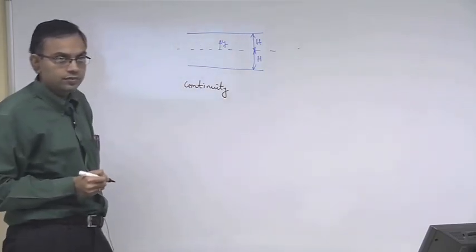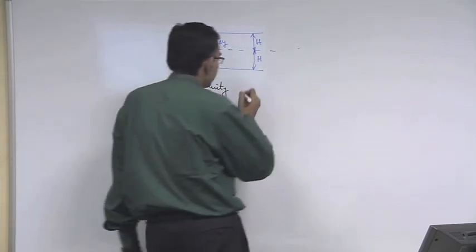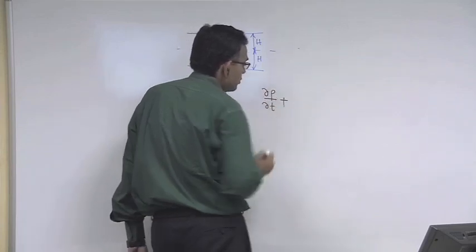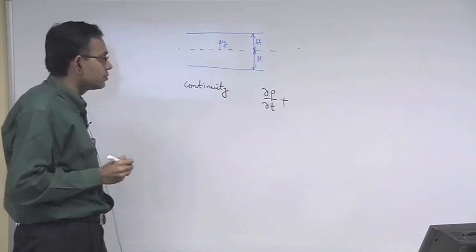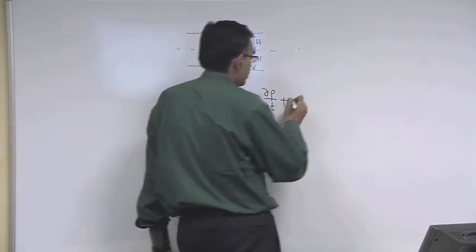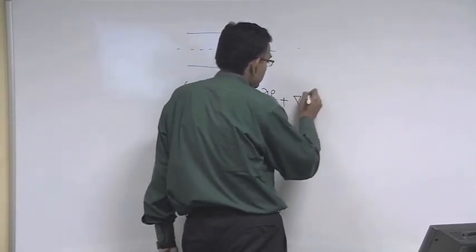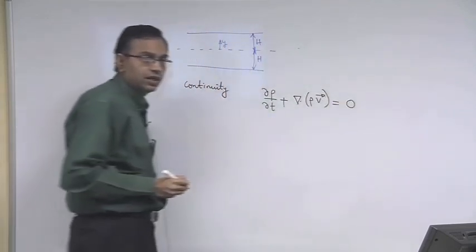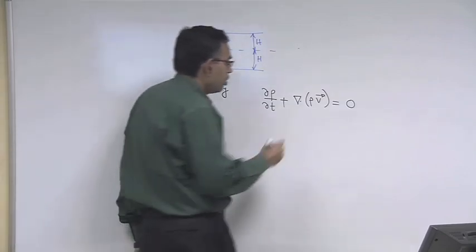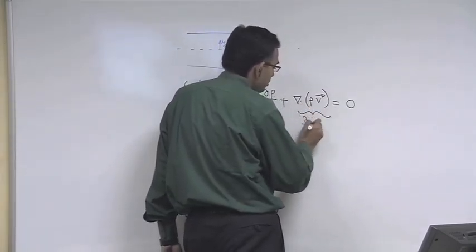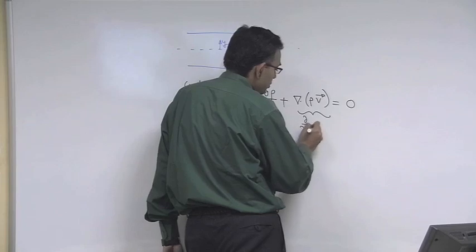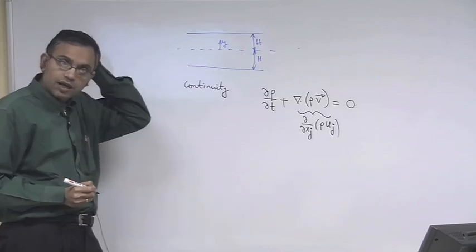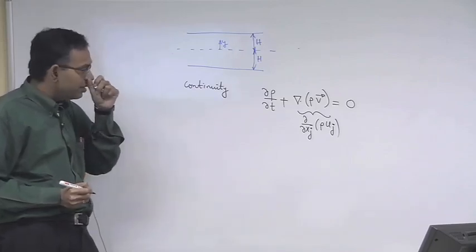First, the continuity equation. This is the continuity equation in vector form, or if you want to write this in index form: del/del x_j of (rho u_j). Either form is equivalent.